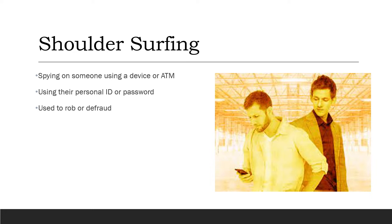Shoulder surfing is when someone spies on another person. They might be using their device and somebody's looking over their shoulder, or they might be using an ATM. This way they obtain personal information like an ID or password, and then use this information to rob or defraud the person.